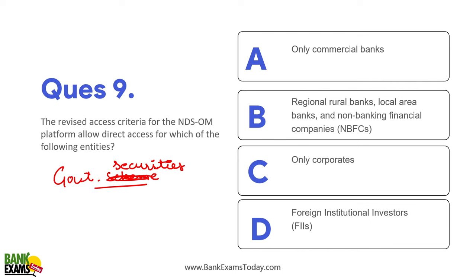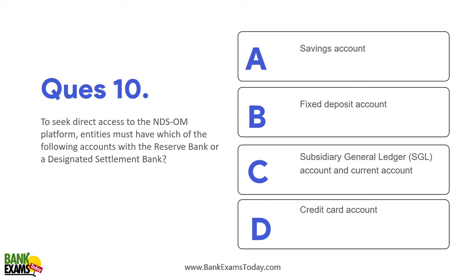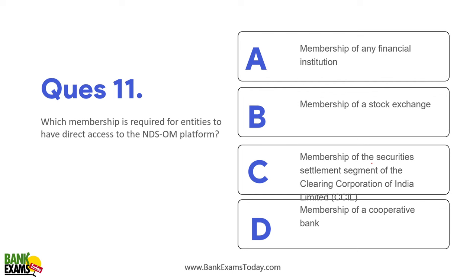RBI is going to provide direct access to Regional Rural Banks, Local Area Banks, and NBFCs — they can now take direct access to NDS-OM. To seek direct access on NDS-OM, entities must have a Subsidiary General Ledger account and a current account with RBI. Which membership is required? Membership of the Securities Settlement Segment of the Clearing Corporation of India.